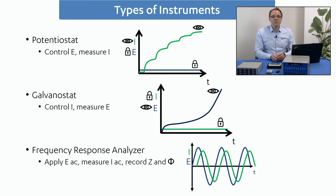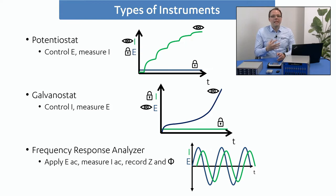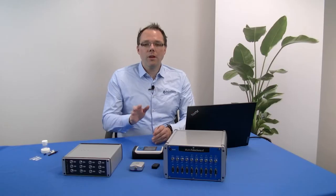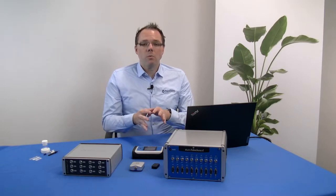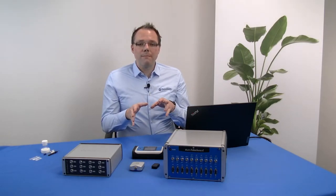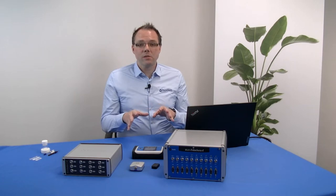The frequency response analyzer is used for electrochemical impedance spectroscopy, a rather advanced electrochemical technique that's very surface sensitive. It can really be used for label-free techniques or maybe for checking coatings. So now you have an overview of what the different instruments are, and what will be the first thing you will notice about a potentiostat that makes it so special?